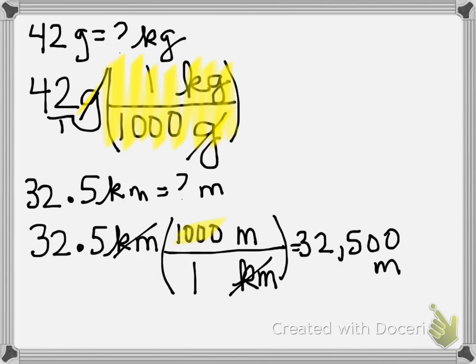Your middle school teachers thought that you couldn't understand that the reason you were taught to move the decimal place three times to the right was because you were multiplying by 1,000. Although I know these problems are simple enough to do like you did in middle school, it's really important that you're learning how to set up these problems properly.